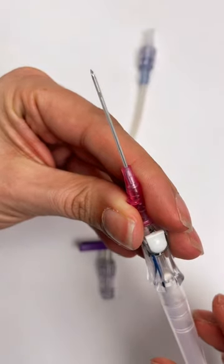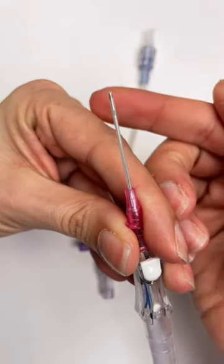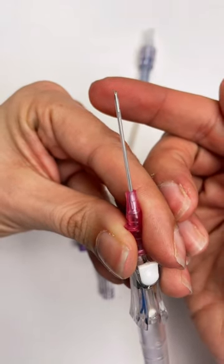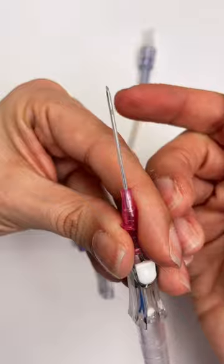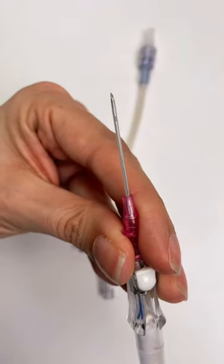So when you first see flash, what you are actually seeing is blood entering through the bevel of the needle right here, meaning that the needle has just pierced the vein, but the catheter is not yet fully seated within that vein. Let me show you.